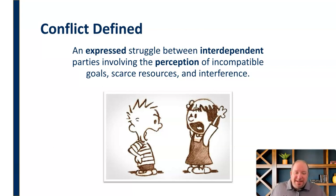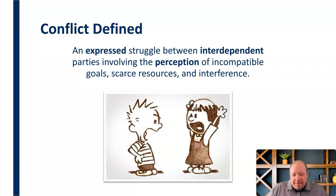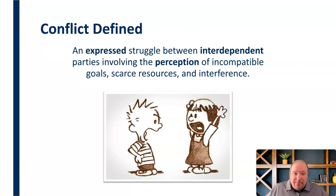Conflict is between interdependent parties, meaning they have some sort of connection where one party affects the other. In a group, you're going to be interdependent for sure. It can involve incompatible goals, scarce resources, or interference — or it could just involve the perception of those things. Those things don't even have to be real; if one or both people believe that there are incompatible goals or scarce resources, conflict can result.